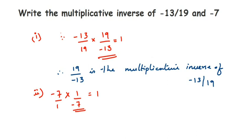Again, the negative sign can be kept in the numerator or denominator — it's your choice. Therefore, 1 by minus 7, or equivalently minus 1 by 7, is the multiplicative inverse of minus 7. That's it — I hope it's clear how to find the multiplicative inverse. Thank you so much for watching.